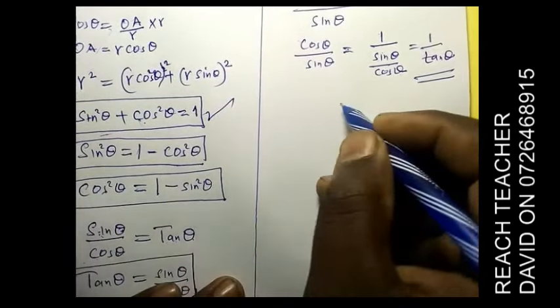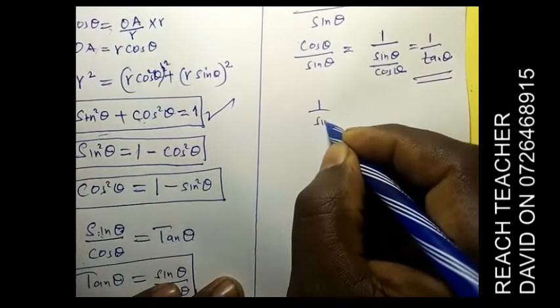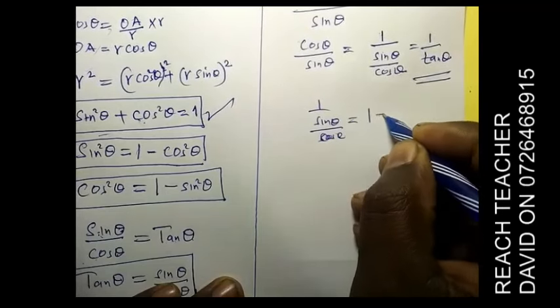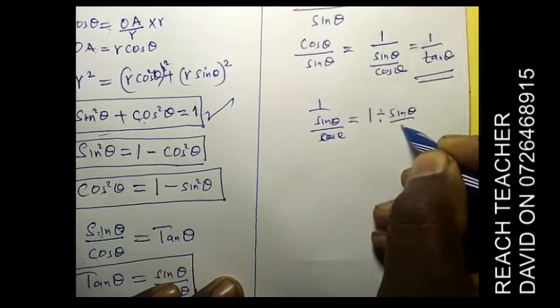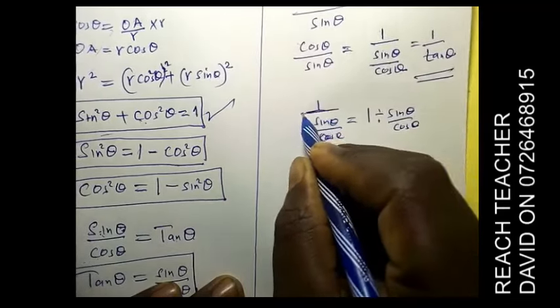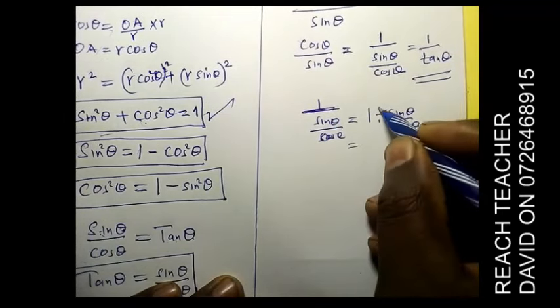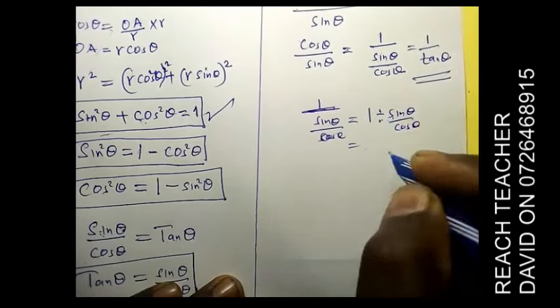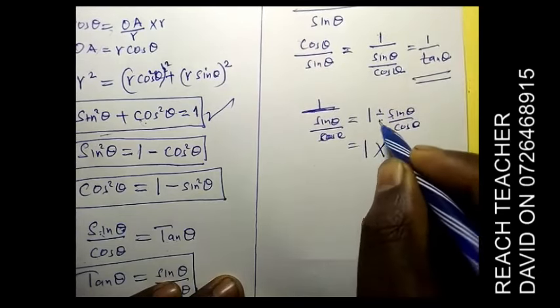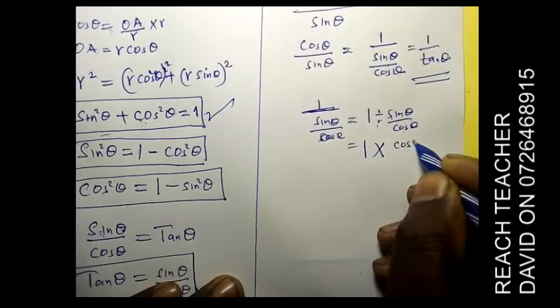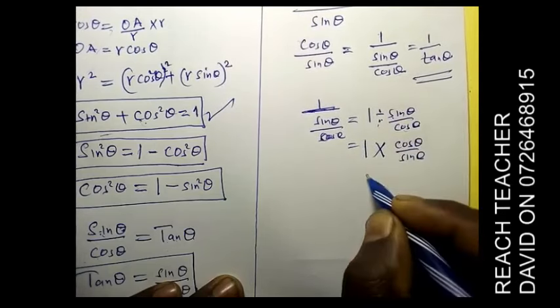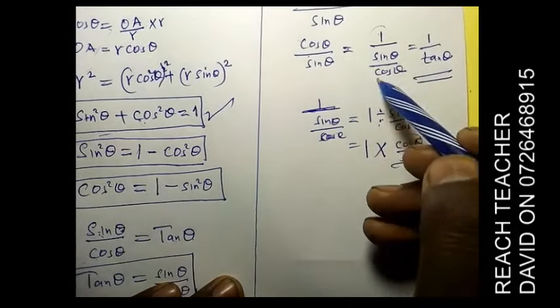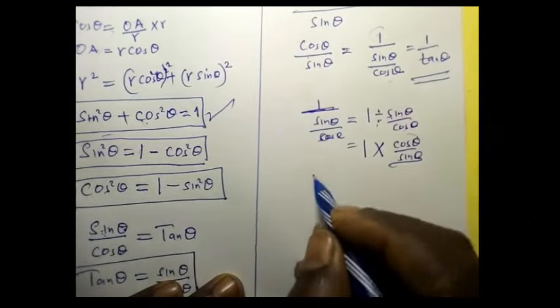1 over sine theta cos theta is simply the same as 1 divided by sine theta over cos theta. Remember, this is a division. So 1 divided by sine theta. We want to remove the division sign by doing what you learned in fractions. So 1 times, when we multiply here, we have the reciprocal, which is cos theta divided by sine theta. So what is this? It is what we have. I just wanted to show you that this one and this one is the same thing. Now let us go to example 2.